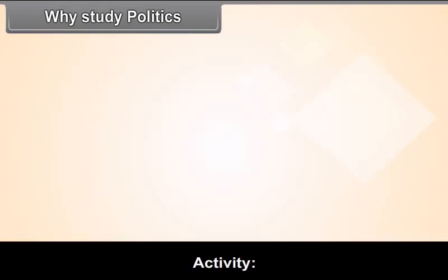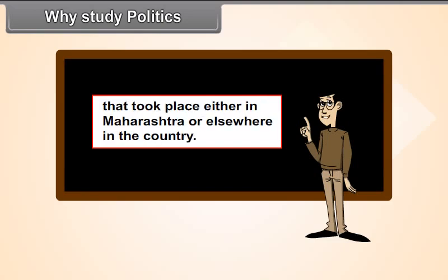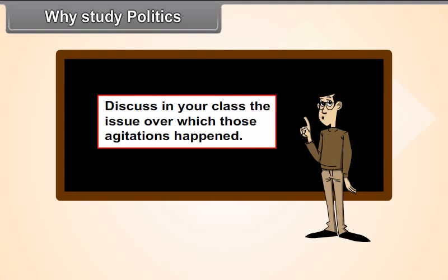Activity: Read from newspapers of the last one month news about agitations that took place either in Maharashtra or elsewhere in the country. Discuss in your class the issues over which those agitations happened.